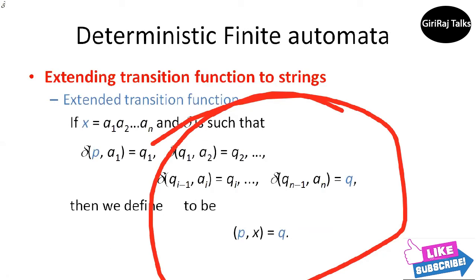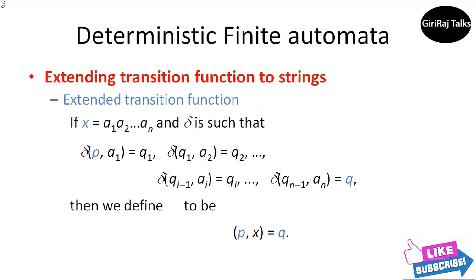Let us move to extending the transition function to strings. The DFA defines a language — the set of all strings that result in a sequence of state transitions from the start state to an accepting state. In terms of the transition diagram, the language of a DFA is the set of labels along all paths that lead from the start state to any accepting state. We define an extended transition function that describes what happens when we start in any state and follow any sequence of inputs. If delta is our transition function, then the extended transition function constructed from delta will be called delta-hat. It takes a state Q and a string W and returns the state P that the automaton reaches when starting in state Q and processing the sequence of inputs W.